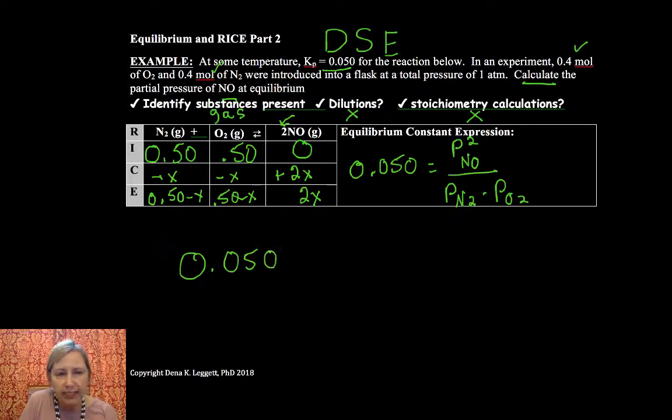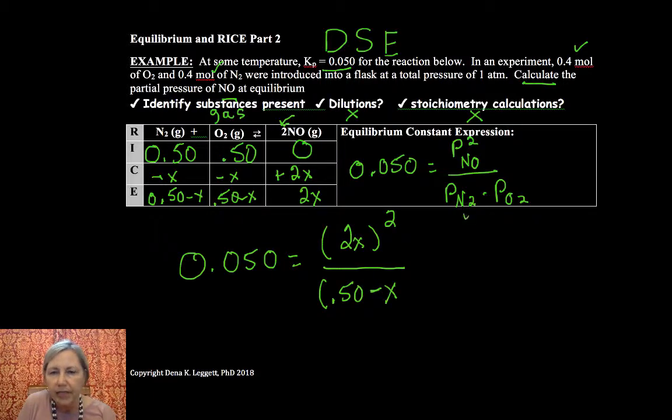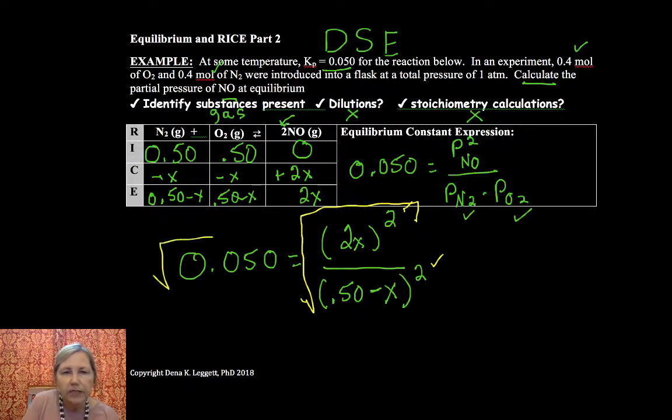So I have 0.50 minus X, 0.50 minus X, and 2X. Plug that in and this looks like it's going to be fairly complicated. So I'm going to have 2X squared in my numerator and 0.50 minus X, but since those are equal to one another, that ends up to be squared in the denominator. And this looks like some yucky long algebra coming at you, but if you recognize both the numerator and the denominator are squared, you'll see that we can simply take the square root of both sides of this equation.